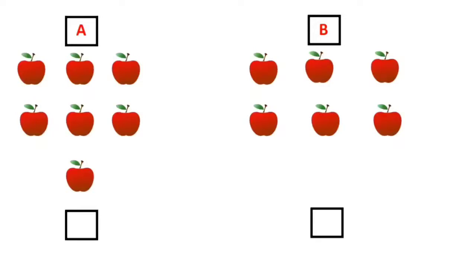We can see 2 sets of apples. Look at set A. How many apples can you see? Let us count. 1, 2, 3, 4, 5, 6 and 7.